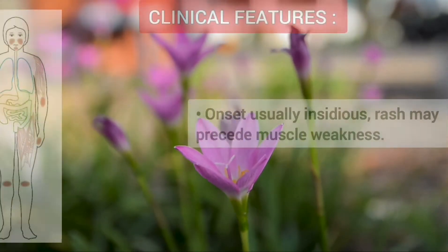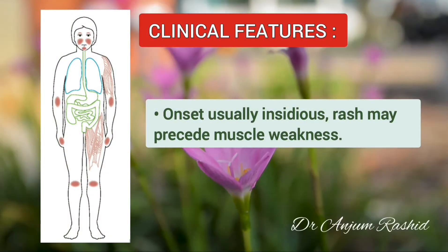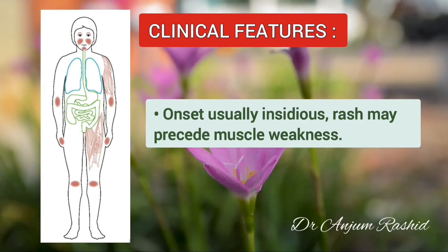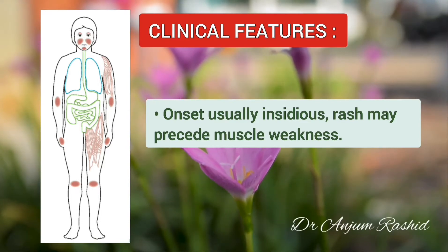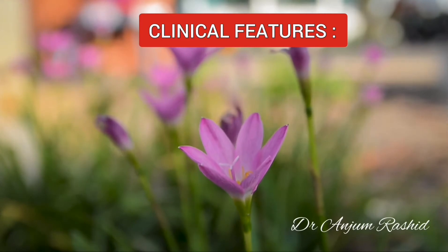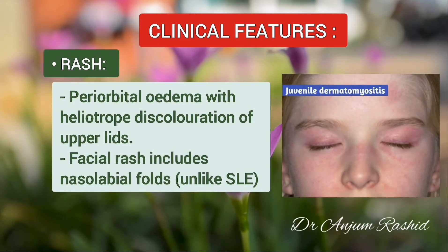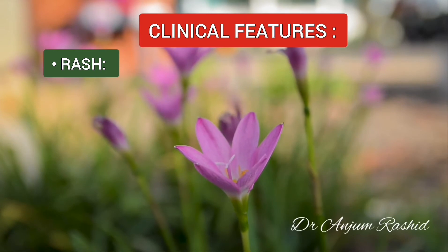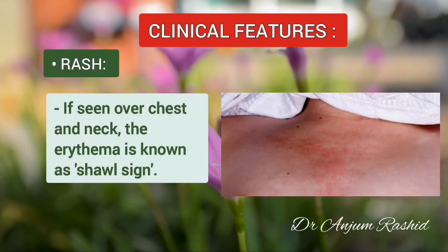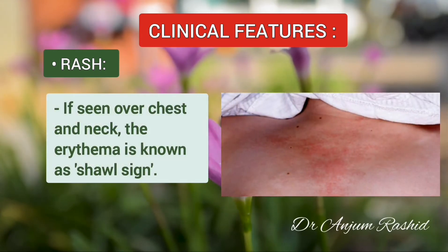Onset of JDM is usually insidious and rash may precede muscle weakness. There is periorbital edema with a heliotrope discoloration of the upper lids, and facial rash includes nasolabial folds. If seen over the chest and neck, this erythema is known as the shawl sign.